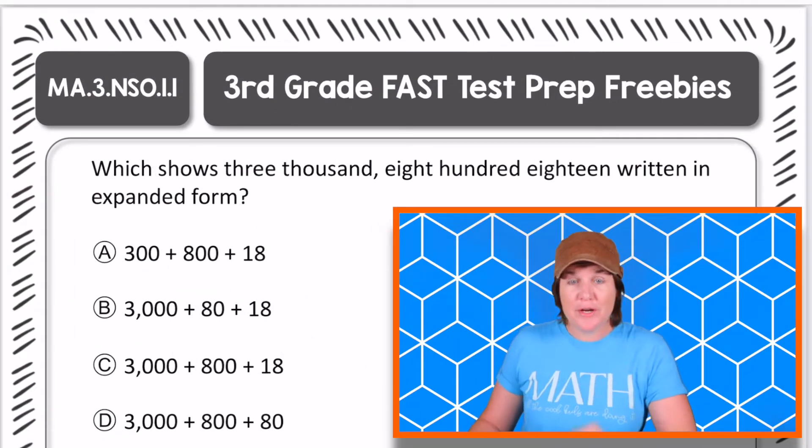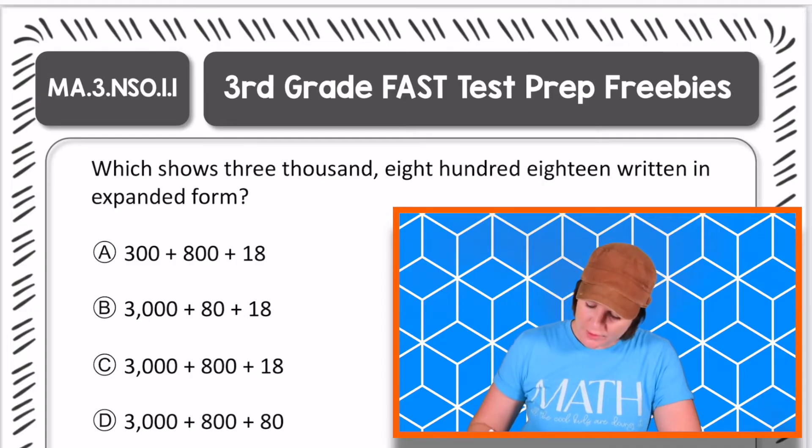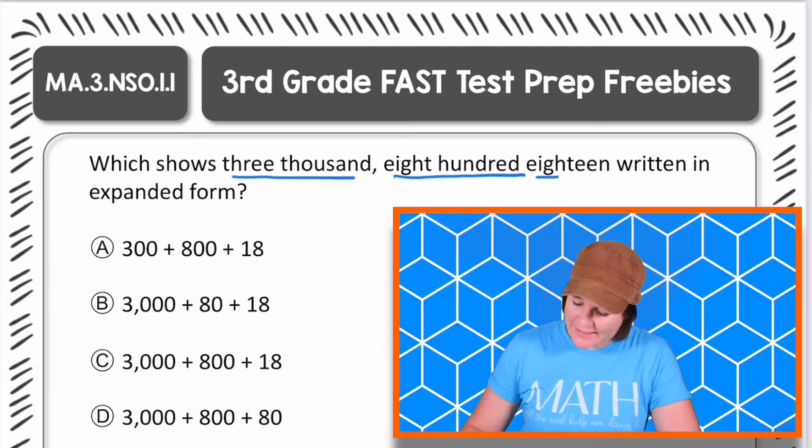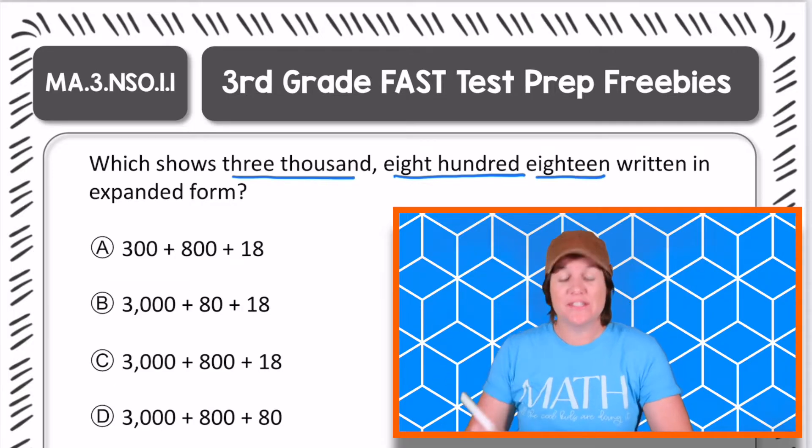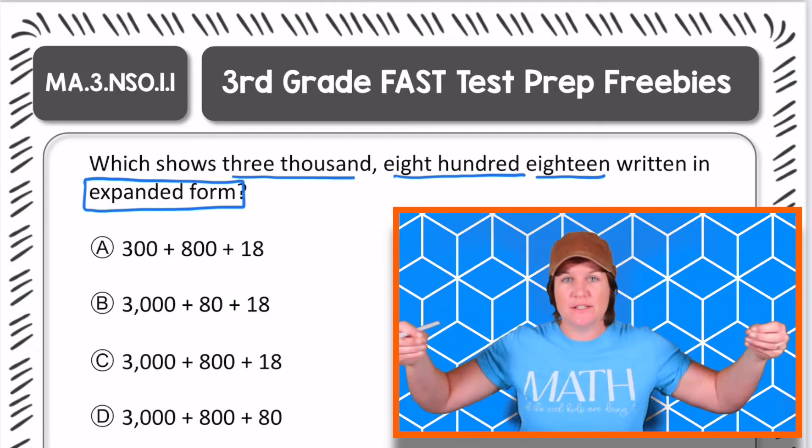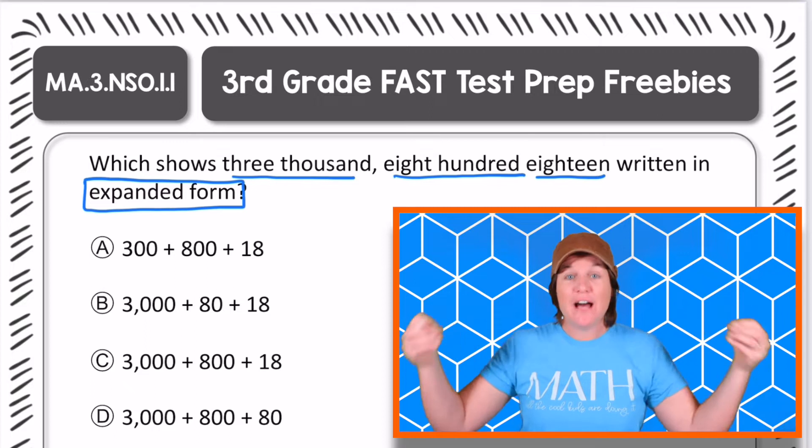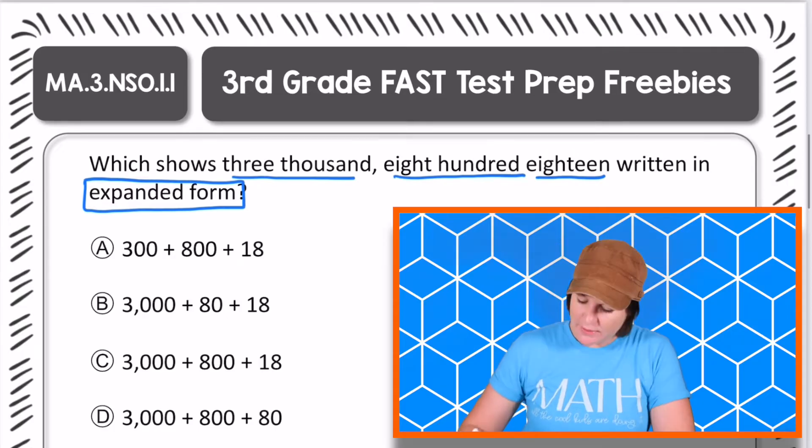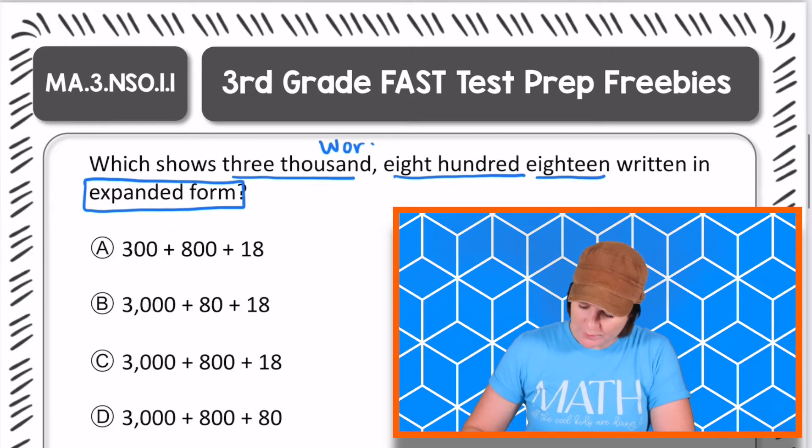All right, everybody, here is our third grade problem of the week. It says, which shows 3,818 written in expanded form. So we're looking for which one shows expanded form. That's where we're stretching out the values of the number. Right now we have 3,818. This is word form.